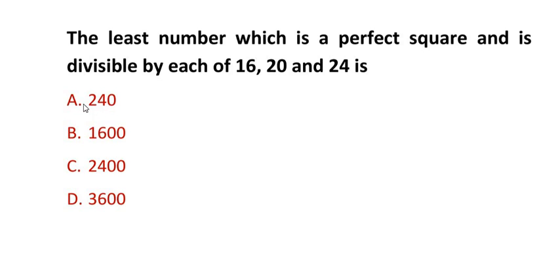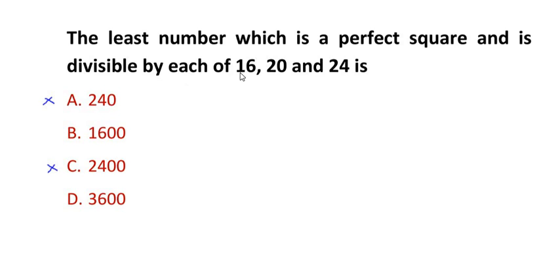Looking at the options: 240 is not a perfect square, 1600 is a perfect square of 40, 2400 is not a perfect square, but 3600 is a perfect square of 60. So we are left with only two options to check. We discard the numbers which are not perfect squares and keep only the perfect squares. To check which of the two is divisible by each of these numbers, we go for the LCM of 16, 20, and 24.